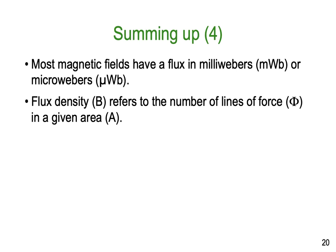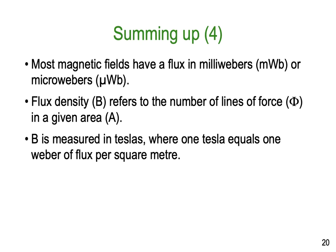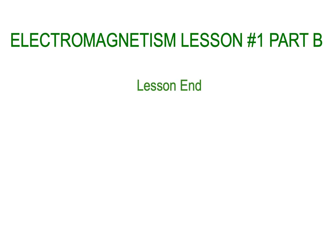A magnet can lose its magnetism through excess heat (mixing up the molecules), physical vibration and stress (tapping a screwdriver with a hammer will demagnetize it), or exposure to a magnetic field of opposite polarity. A soft iron keeper across the poles of a magnet helps retain its magnetism. Magnetic flux phi is measured in Webers where one Weber equals ten to the eight lines of force. Flux density B is measured in Teslas, with the formula B = phi / A (Webers divided by area in square metres).